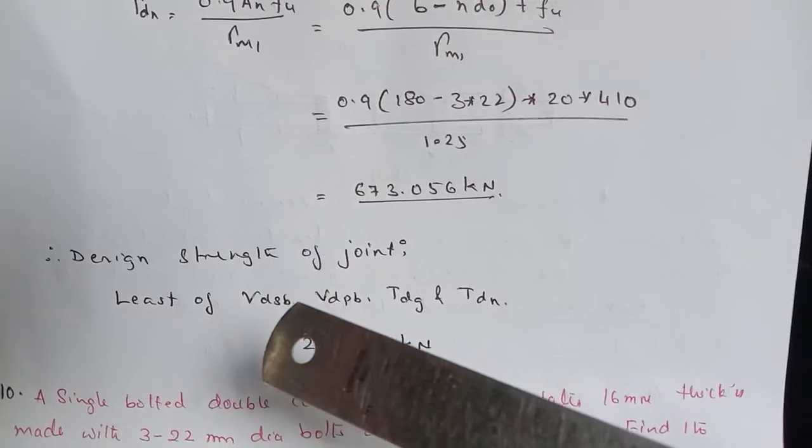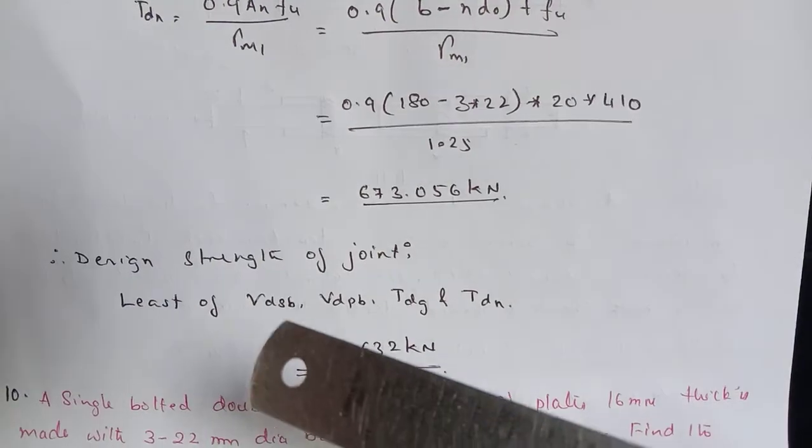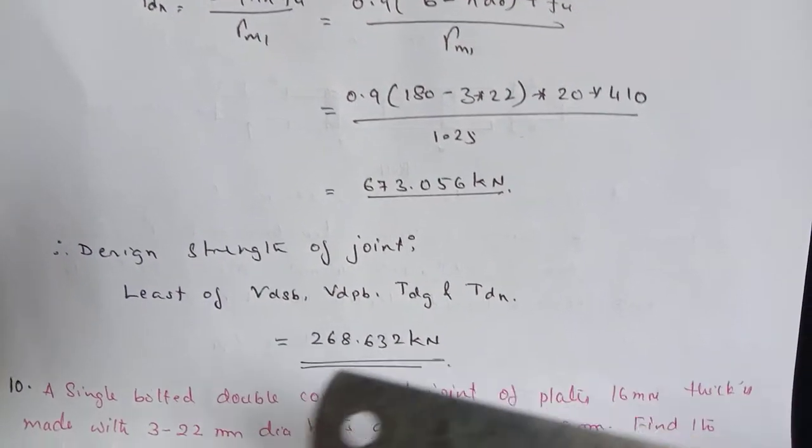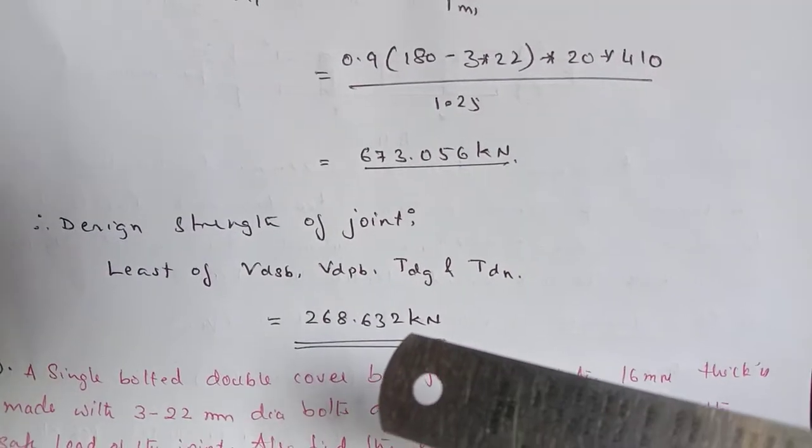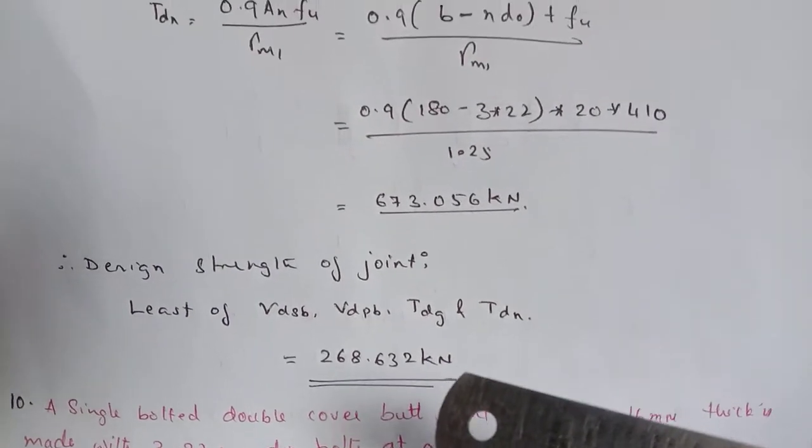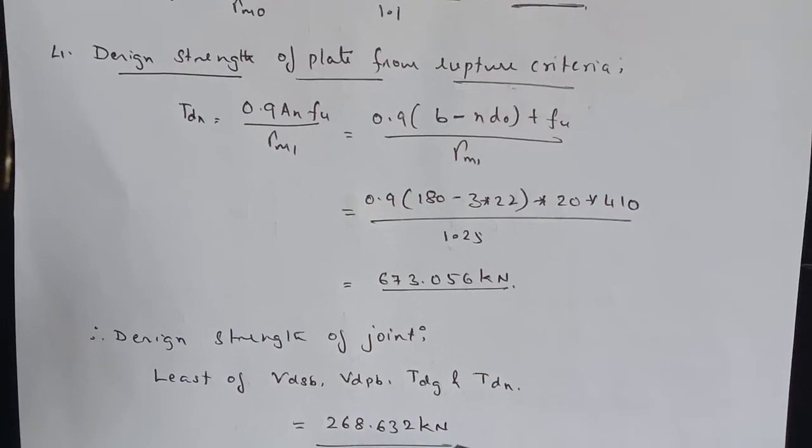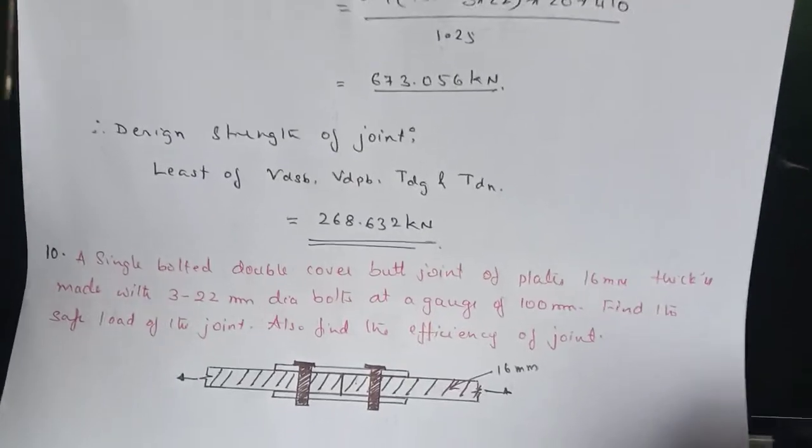So the design strength of the joint is nothing but least of VDSB, VDPB, TDG and TDN works out to be 268.32 kilonewton. This is how we can solve the problem of butt joint. Let us take one more problem here.